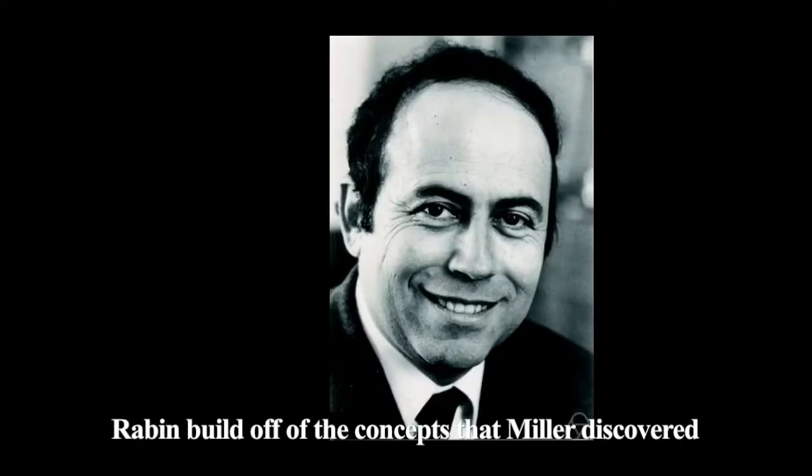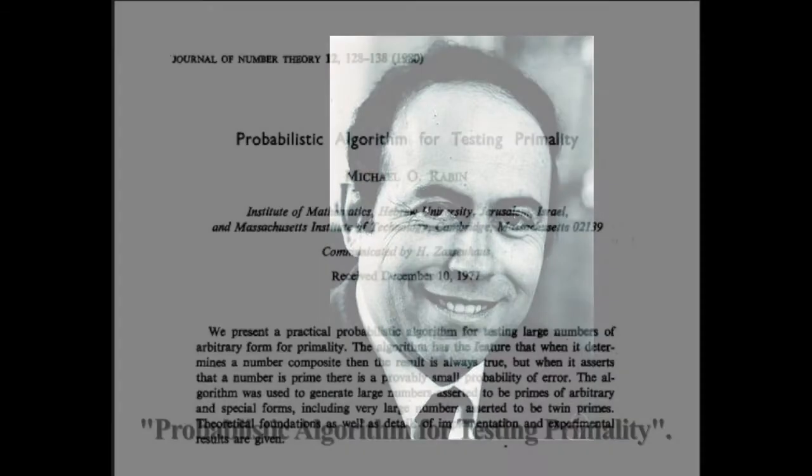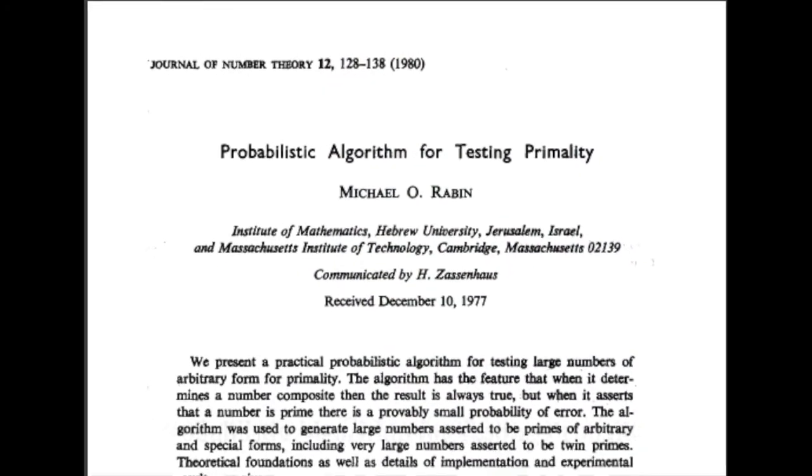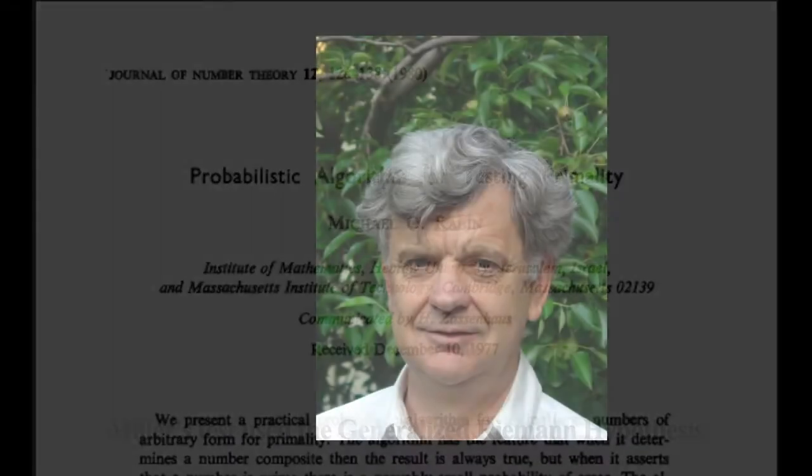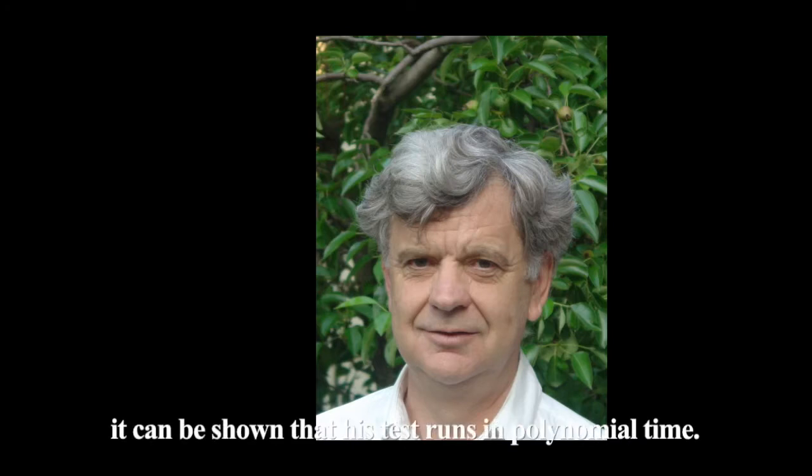Rabin built off the concepts that Miller discovered and published his findings and the algorithm as we use it today in 1980 with the title Probabilistic Algorithm for Testing Primality. Miller's test used a generalized Riemann hypothesis to prove its efficacy, but Rabin realized that he could write a better primality test with the same underlying concepts. Rabin's test today does not require the assumption of the GRH, but if the hypothesis is assumed, it can be shown that his test runs in polynomial time.